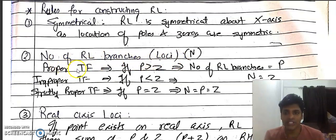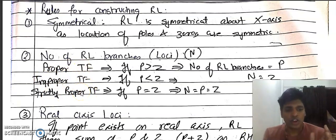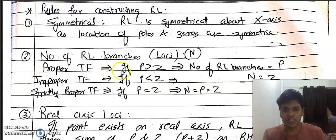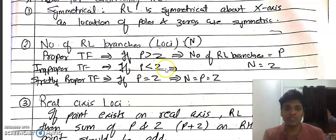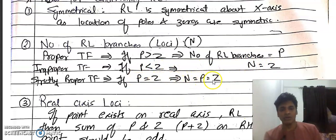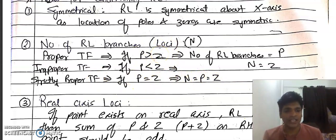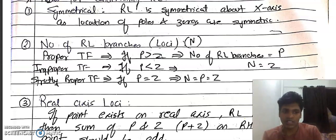Root locus is symmetric because the poles and zeros are either real, repeated, or complex conjugates of each other, making the root locations symmetric. The second rule is the number of root locus branches: if poles are greater than zeros, branches equal P; if zeros are greater than poles, branches equal Z; if poles equal zeros, branches equal that common number.